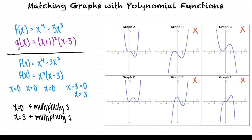Since the multiplicities of both of these zeros are odd, the graph will cross the x-axis at both zero and three. Graph A crosses the x-axis at zero and at three, while graph D only touches the x-axis at zero and at three, indicating that graph A is the graph that matches the function f(x).